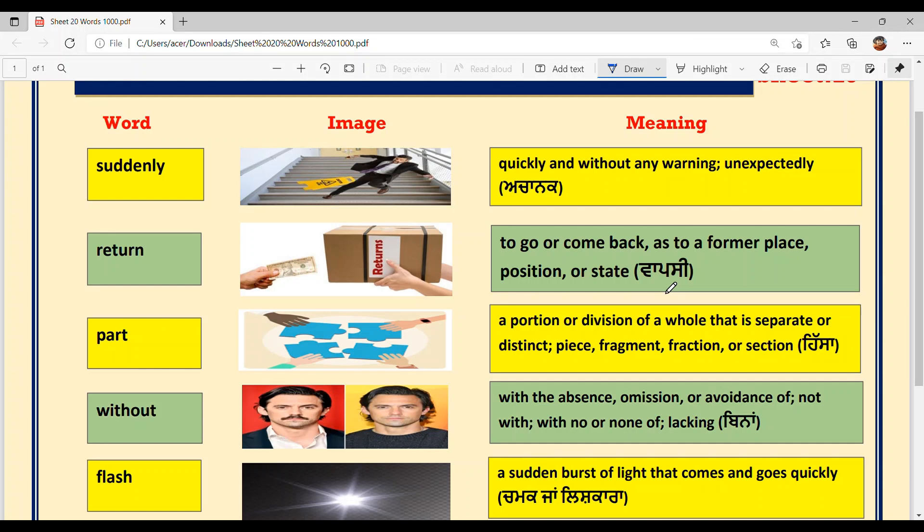A word tussi o situation cha use kar saka de ho. Yaan tussi kitai gaye si, but tussi vapas aare ho. Taan tussi return use kar saka de ho. So bhaat easily sentence frame ho sakda hai. She is returning back to home. O wapas kar aare hi hai. Thik hai?